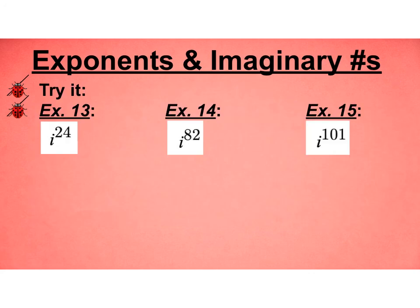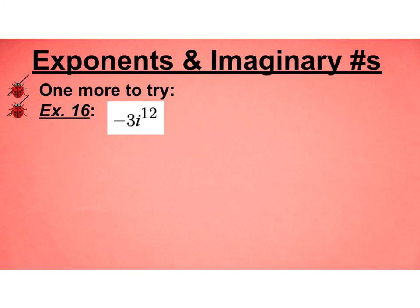So let's try a couple. i²⁴ is divisible by 4, so it's going to equal the same thing as i⁴. And i⁴ is 1, so this is going to equal 1. i⁸² is not divisible by 4, it is divisible by 2, so it's going to be the same thing as i², so it's going to equal -1. i¹⁰⁰ would be divisible by 4, but this is one bigger, so this is going to be the same as i⁵, which is the same as i. And i is i. Let's try one more. -3 × i¹². Well, i¹² is divisible by 4. i⁴ is 1, so this is just going to equal -3.